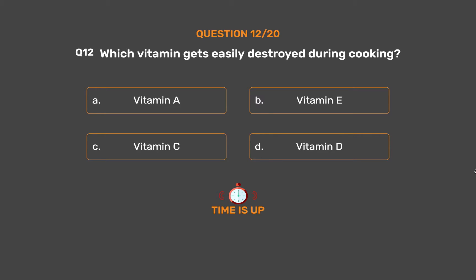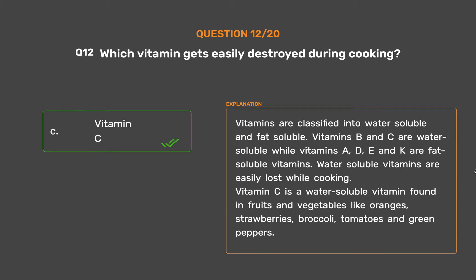The correct answer is Option C - Vitamin C. Vitamins are classified into water-soluble and fat-soluble. Vitamins B and C are water-soluble, while vitamins A, D, E, and K are fat-soluble vitamins. Water-soluble vitamins are easily lost while cooking. Vitamin C is a water-soluble vitamin found in fruits and vegetables like oranges, strawberries, broccoli, tomatoes, and green peppers.